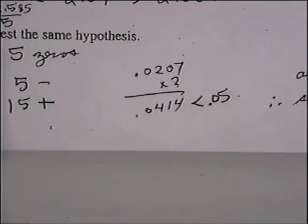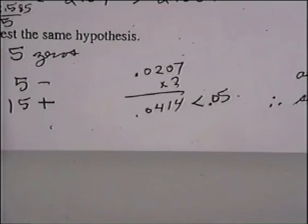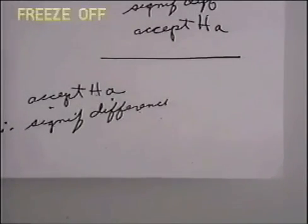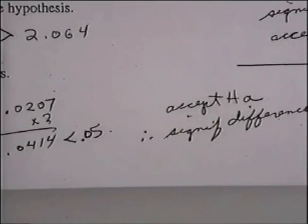I'm testing at 95%, so I can have a 5% error. This is my p-value. Is it smaller than 0.05? If it is, these are different. If it's bigger than 0.05, these are the same. Looking at 0.0414 — that is smaller than 0.05. Therefore, I reject the null hypothesis, I accept the alternate hypothesis, and I conclude that the results are significantly different.